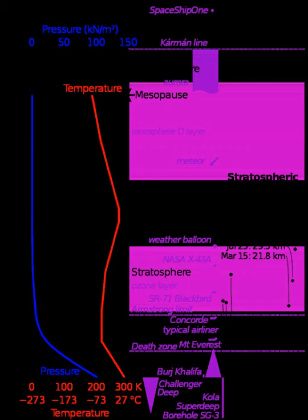It has been established to provide a common reference for temperature and pressure and consists of tables of values at various altitudes, plus some formulas by which those values were derived. The International Organization for Standardization publishes the ISA as an international standard, ISO 2533-1975. Other standards organizations, such as the International Civil Aviation Organization and the United States Government, publish extensions or subsets of the same atmospheric model under their own standards-making authority.